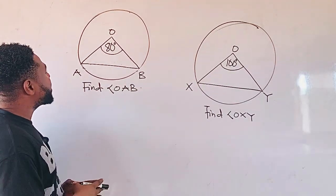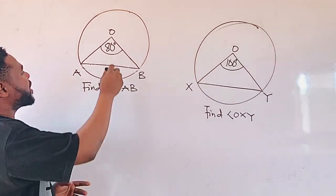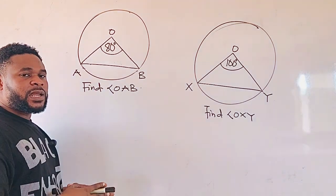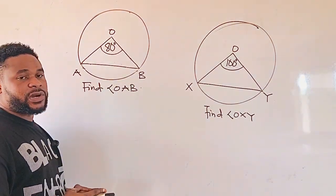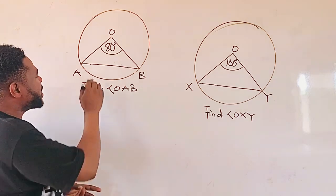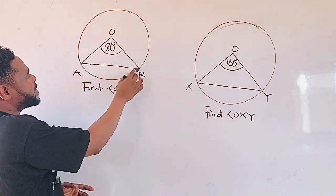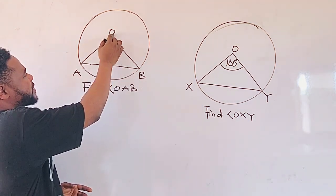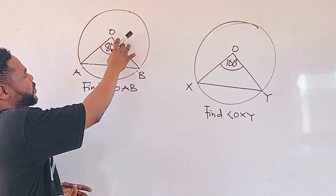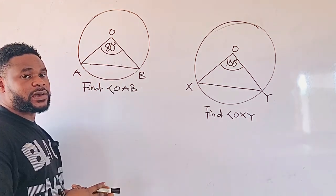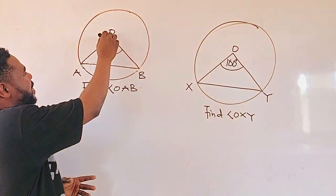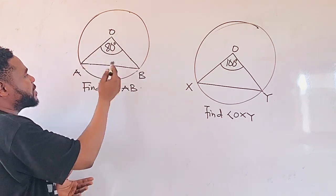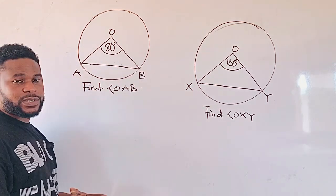We want to look at how we can find angle OAB in this diagram. There is a property in circle theory which states that any time a chord, let's say AB, creates an angle at the center of the circle, we form an isosceles triangle because line OB is equal to line OA as they are radii.